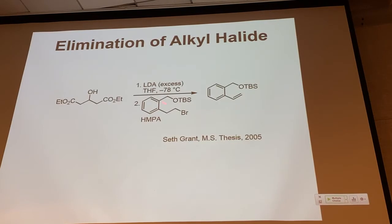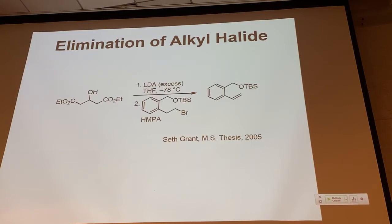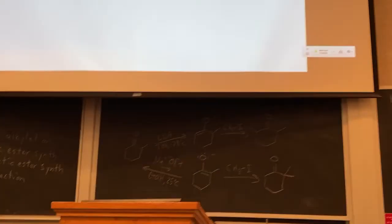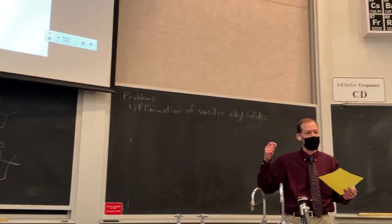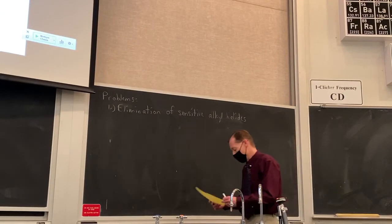Why was this alkyl halide more prone to elimination? Because in the transition state leading to the product, you have a partial double bond that's conjugated, lowering the energy of that transition state and making the E2 reaction easier than with a regular primary alkyl halide. So even with some primary alkyl halides, you can have elimination instead of the desired alkylation. Note that TBS is an abbreviation for TBDMS — the tert-butyldimethylsilyl ether group — a protecting group for an alcohol.